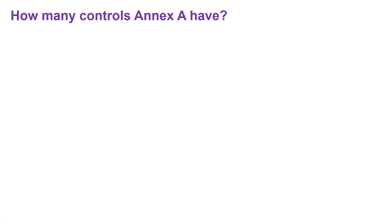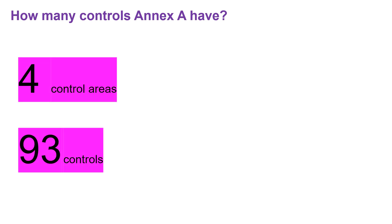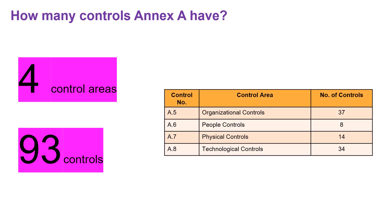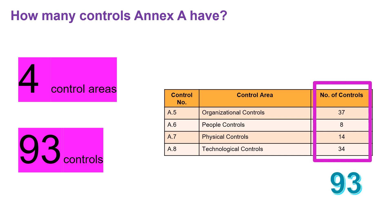Annex A has a total of 93 controls divided into 4 control areas: organizational controls, people controls, physical controls, and technological controls. Organizational controls total 37, people controls total 8, physical controls total 14, and technological controls total 34. A helpful mnemonic to remember these is TOP — technological, organizational, people, and physical.